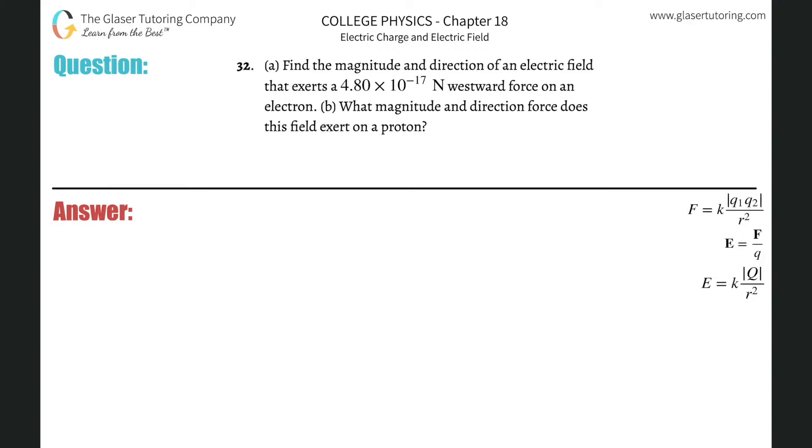Number 32, letter A. Find the magnitude and direction of an electric field that exerts a 4.8 times 10 to the minus 17 newton westward force on an electron.